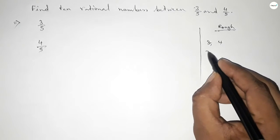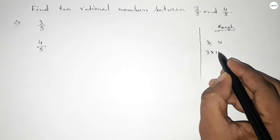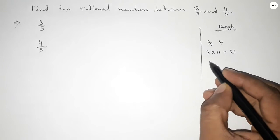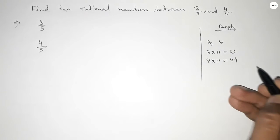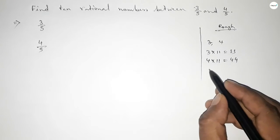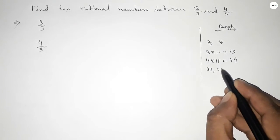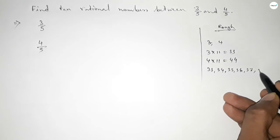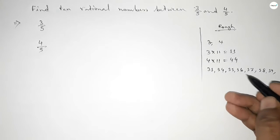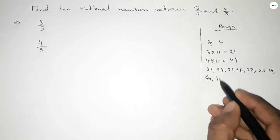So if you multiplying 3 with 11, this is 33, and 4 into 11, this is 44. Now between 33 to 44 we can find out 10 natural numbers and by these natural numbers we can form 10 rational numbers between 3 over 5 and 4 over 5.